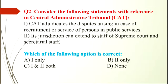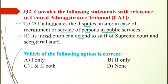Question number 2 is with reference to the Central Administrative Tribunal, i.e., CAT. Statement 1: CAT adjudicates the disputes arising in the case of recruitment or service of persons in public service. Statement 2: its jurisdiction can extend to staff of the Supreme Court and secretarial staff. Statement 1 is correct, statement 2 is incorrect. So the option will be A, one only.